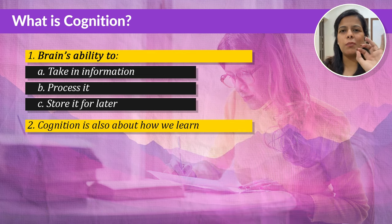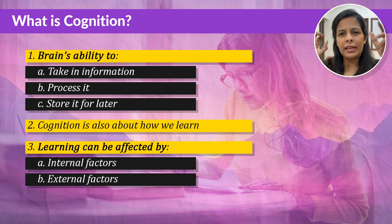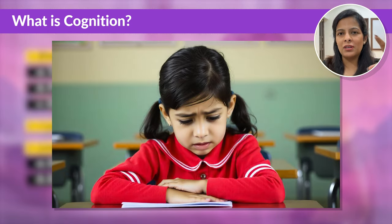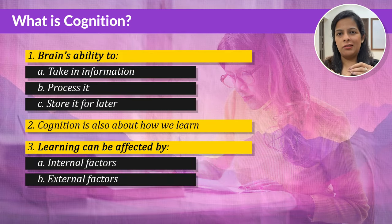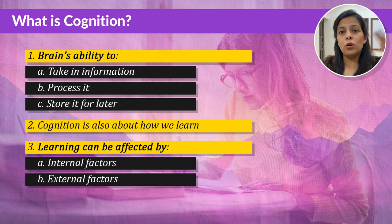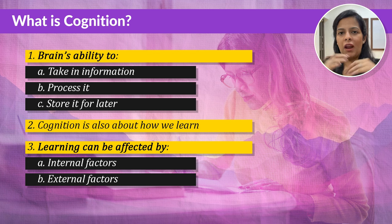Cognition isn't just about thinking — it is also about learning. For example, we've all had days in childhood when we were struggling to focus in class. There can be two reasons for that: internal and external. If you had a fight with your friend and you're too upset about it, you might not be able to focus — that's the internal factor. Maybe the classroom is just too hot — that is the external factor. So both internal and external factors affect learning. This is what cognitive development theory says.